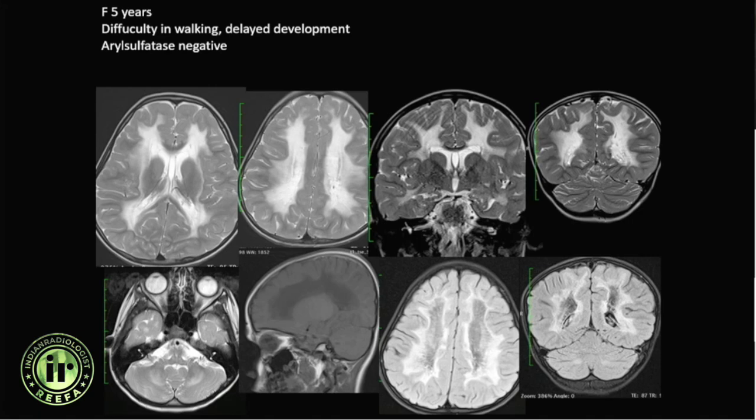The first case is a five-year-old girl with difficulty in walking and delayed development. We first thought it was MLD but arylsulfatase was negative. We are seeing diffuse rarefaction of the white matter on FLAIR images — this was vanishing white matter disease, which was then confirmed.